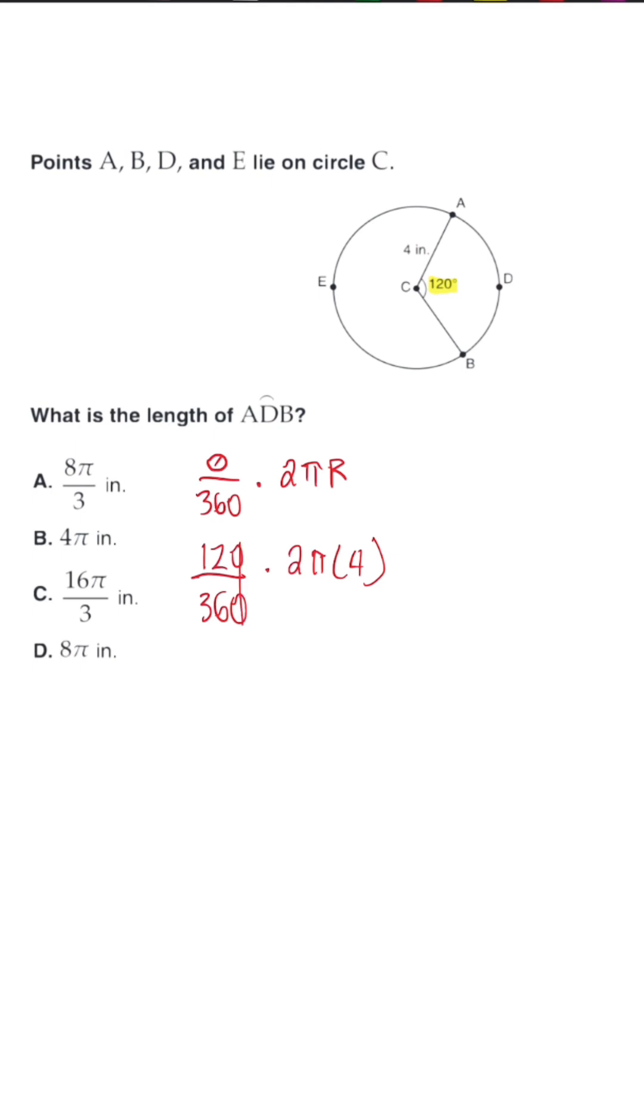So when we simplify, 120 over 360 is going to turn into 1 over 3, and we're going to multiply this by 8 pi. And when we simplify, we're going to have 8 pi over 3 as a final answer.